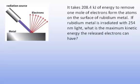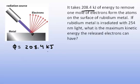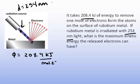So we have the situation where it says it takes 208.4 kilojoules of energy to remove the electrons — so the work function is equal to 208.4 kilojoules per mole of electrons. The incident radiation wavelength is 254 nanometers, which is in the ultraviolet region. So what's the maximum kinetic energy that can be released?